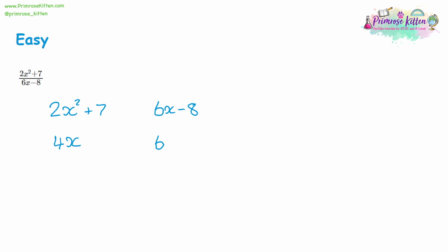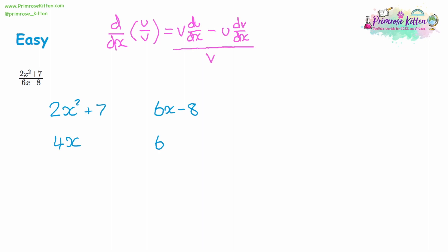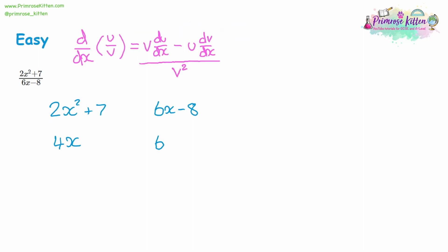The proper notation for the quotient rule is: d/dx of u over v equals v multiplied by du/dx, take away u multiplied by dv/dx, all divided by v squared. Just like the product rule, I'm going to write this in a simpler way. If you've got u over v, then to differentiate it we have v multiplied by u dash, take away u multiplied by v dash — the dash signifying it's been differentiated — all over v squared.